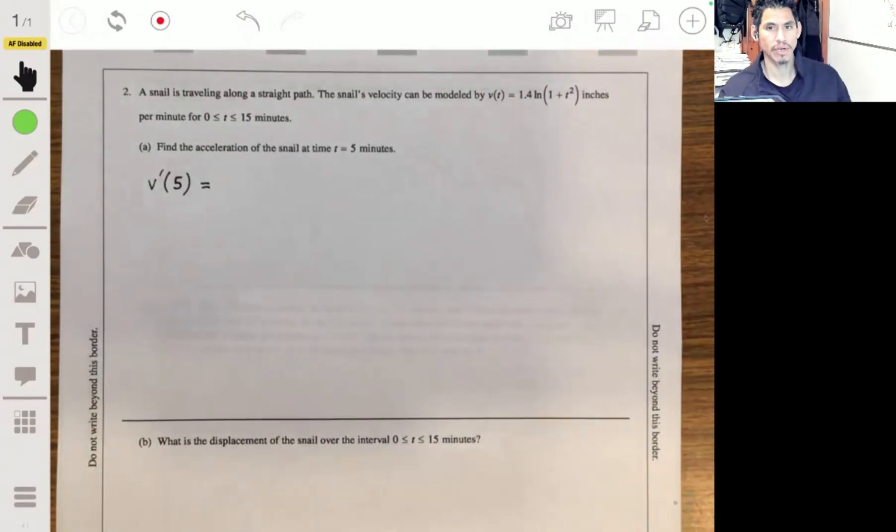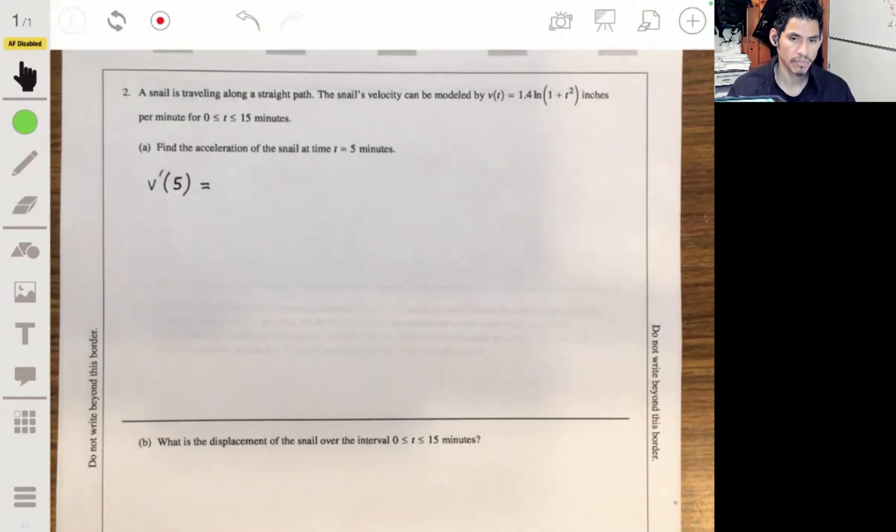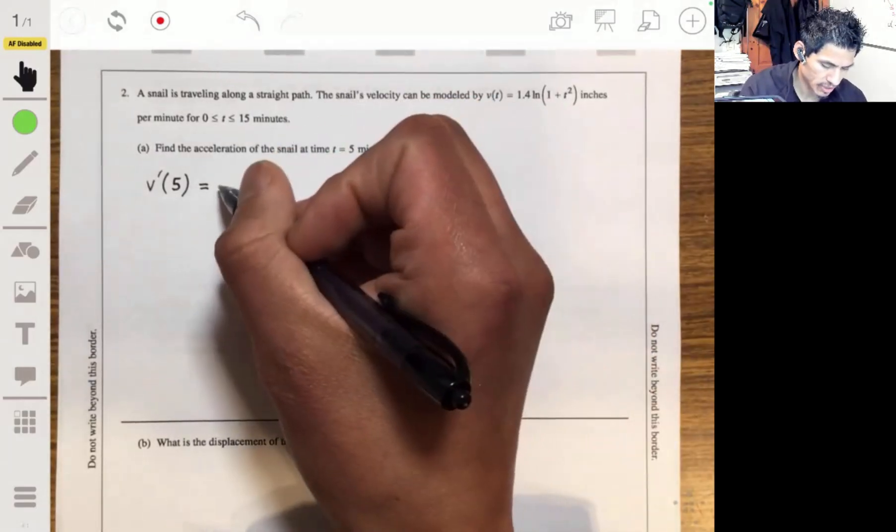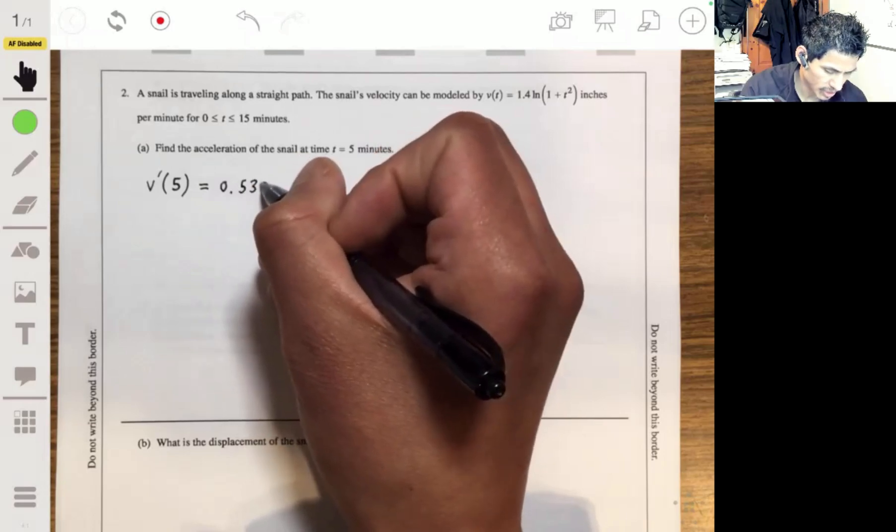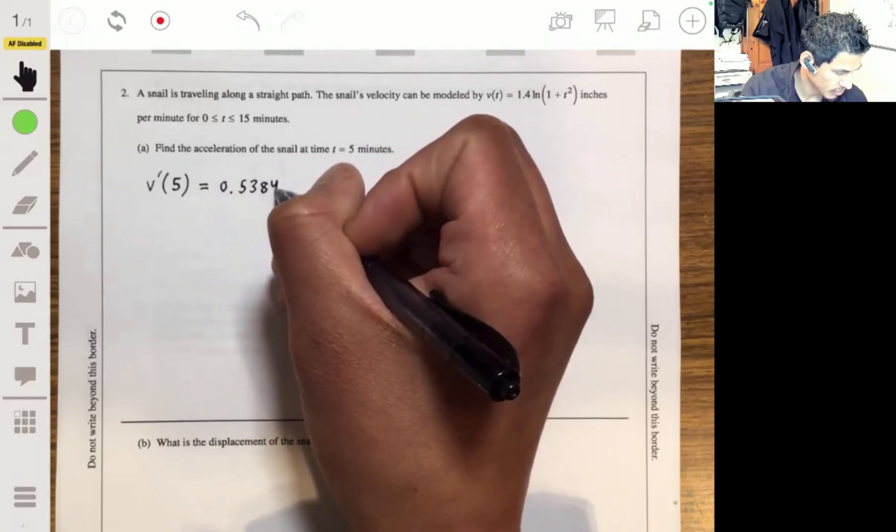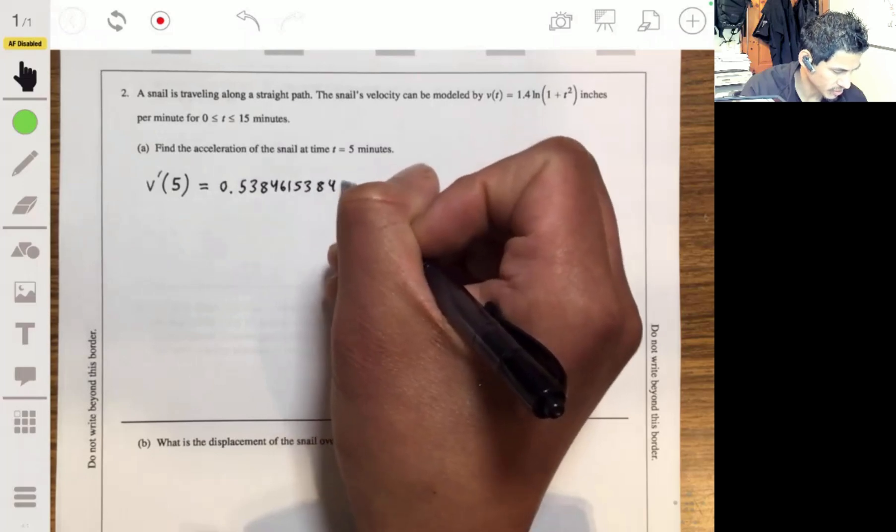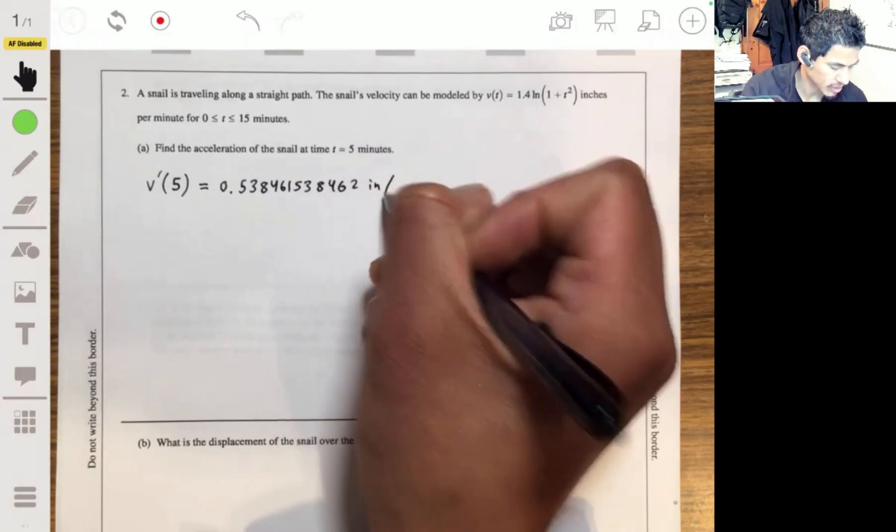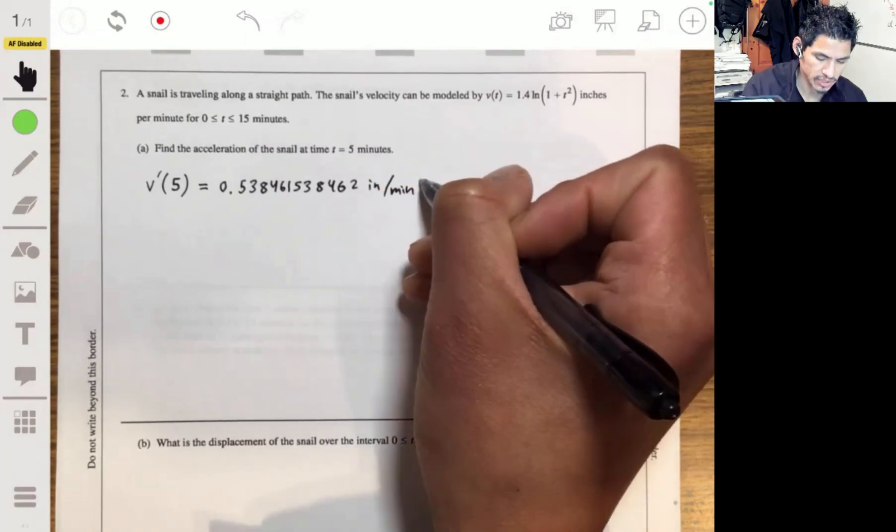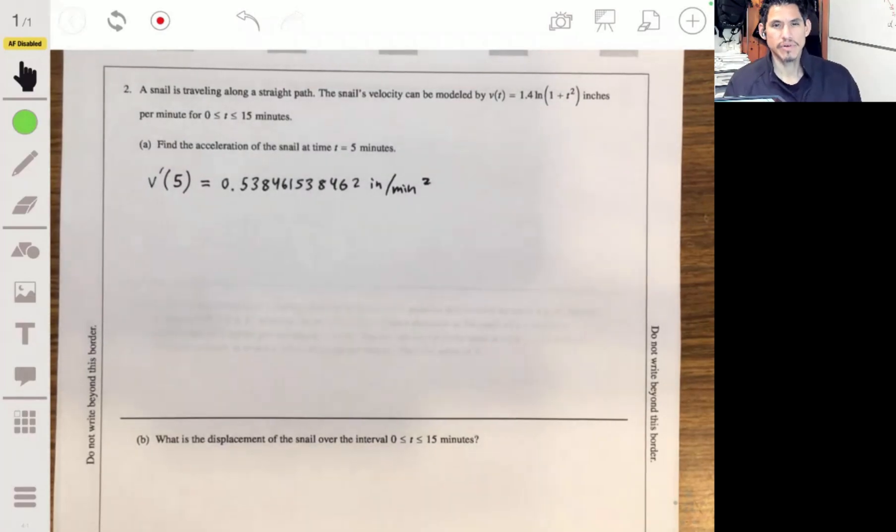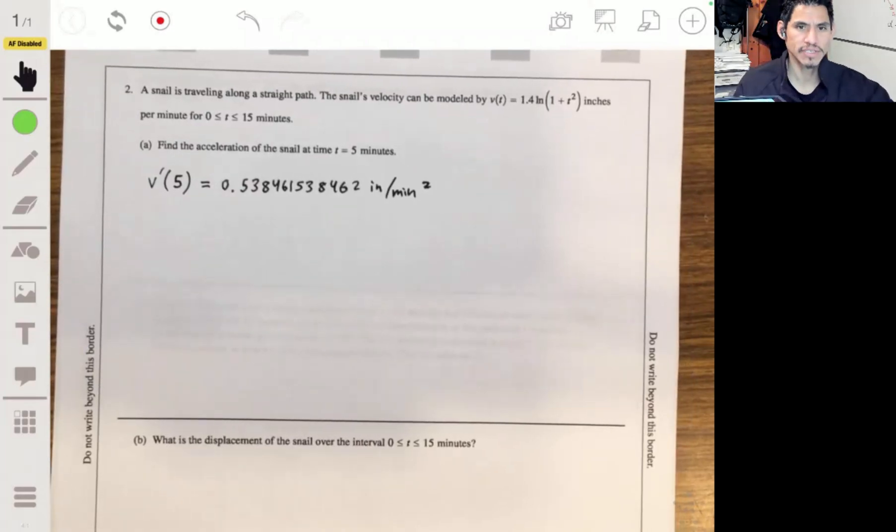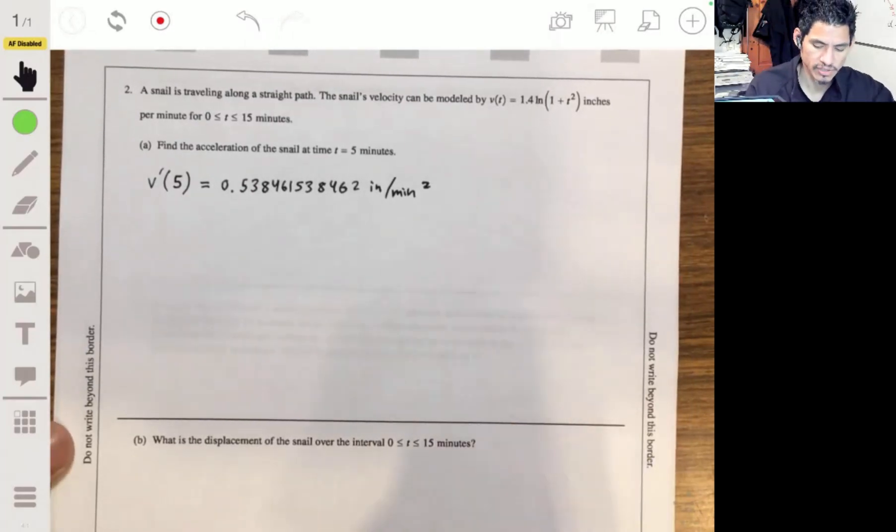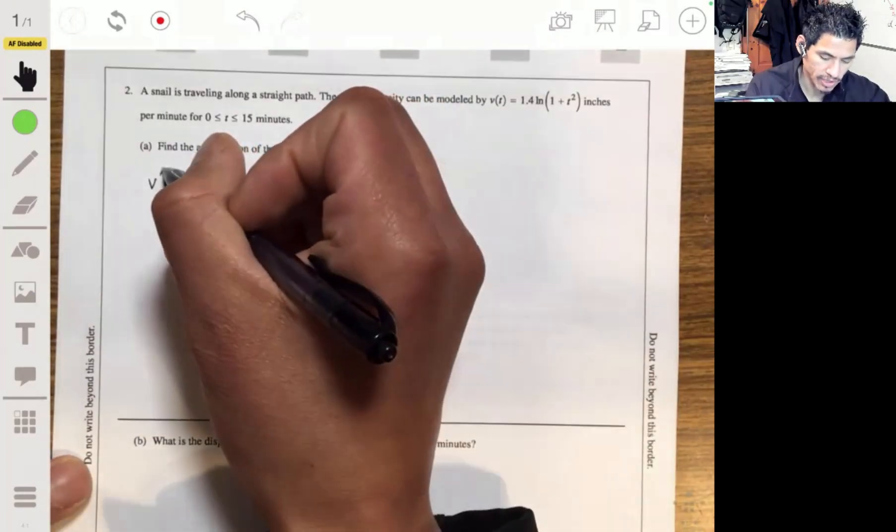Since this is a calculator problem, make sure you make good use of your calculator because it's going to save you a lot of time. Doing that, we're going to get approximately 0.538461538462 inches per minute squared. I always like writing out the whole thing because sometimes they want you to round to something. They always say thousands digits, but I just go as far as I can to make sure there's no issues.